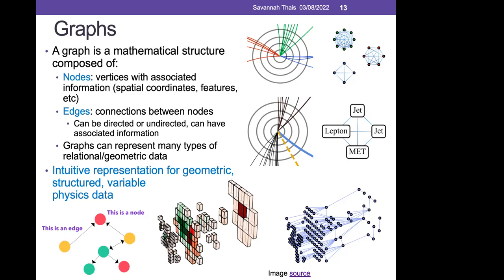There's also no physical ordering to the data, so sequence-based approaches would require enforcing an arbitrary ordering. Graphs are truly appropriate here due to their non-fixed size, non-ordering, and because we know there is a geometric component to this data. I've shown examples of how different types of particle physics data can easily be translated into graphs — energy deposit clusters in the calorimeter, different particle types as nodes, and groupings of decay products — covering many different kinds of problems in particle physics.